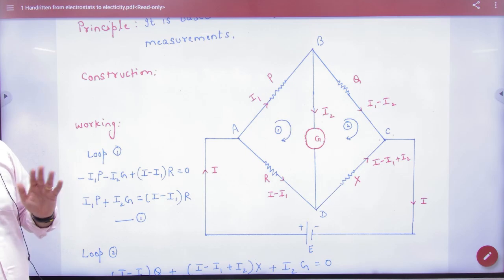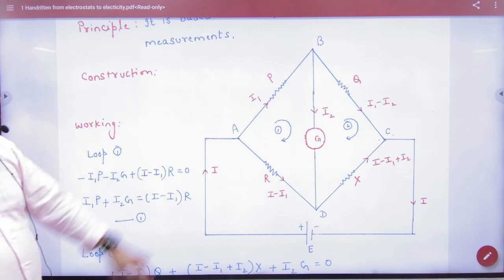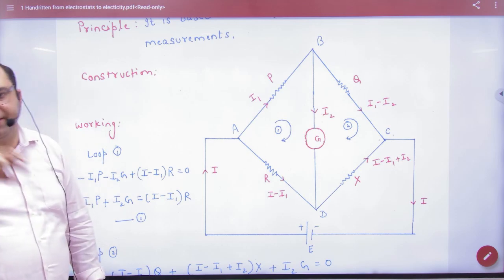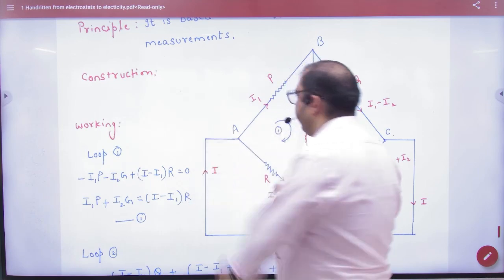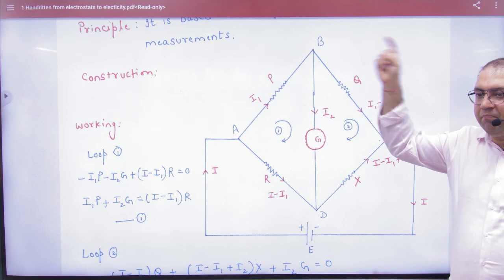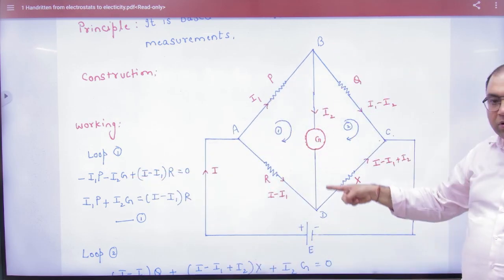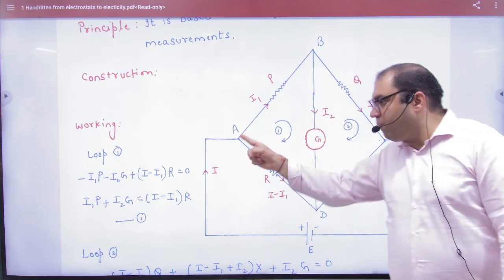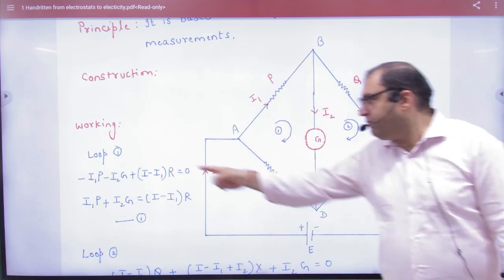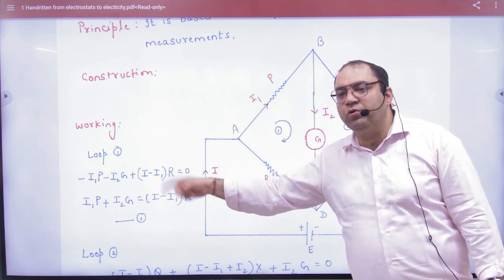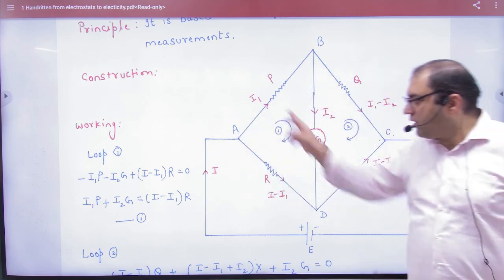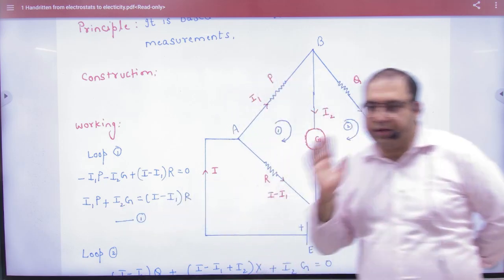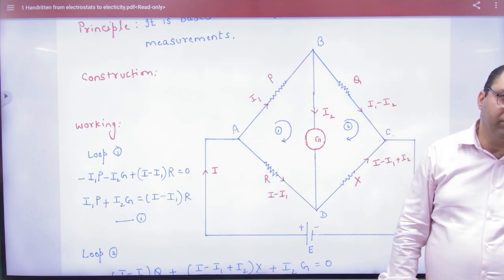Now we want to find X. We will work with the two loops inside - one and two. First take loop number one and apply Kirchhoff's second law, the loop law. Starting from here, going in the direction of current: minus I1·P. Then going down in the direction of current: minus I2·G. Then going opposite to current: plus R·(I minus I1). And the sum will equal zero. When you apply Kirchhoff's law, this term comes to the other side and becomes positive. This is equation number one.